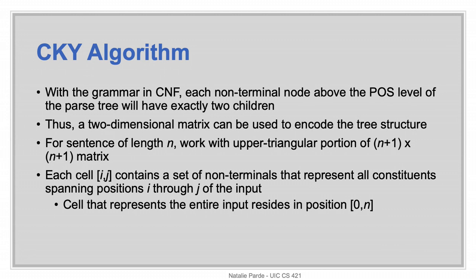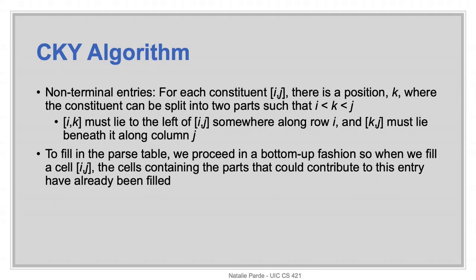Each cell in the matrix will contain the set of non-terminals that represent constituents spanning positions i through j of the input, with the final parse residing in the top right corner. When filling cells, we'll consider that for each constituent belonging to a given cell at position i,j, there must be some point at which it can be split into two parts. The first part would need to lie to the left of the cell, somewhere along the same row, and the second part would need to lie beneath the cell, somewhere in the same column.